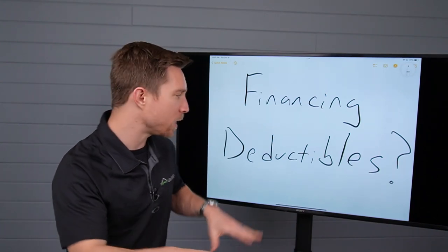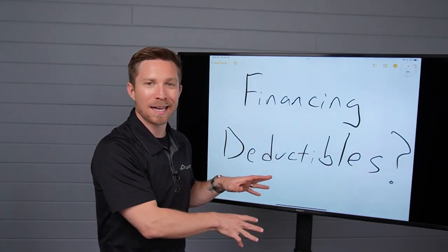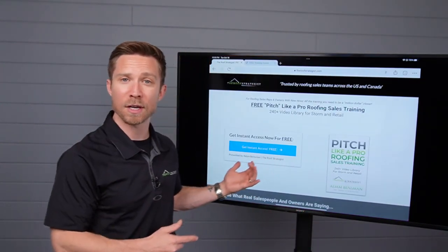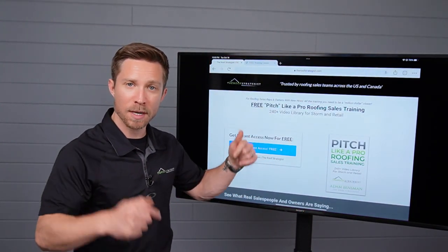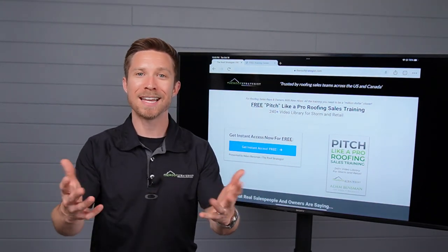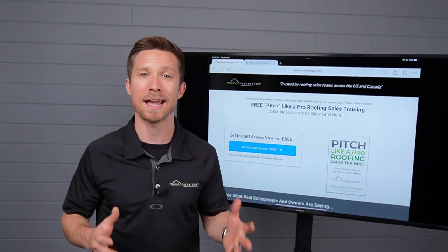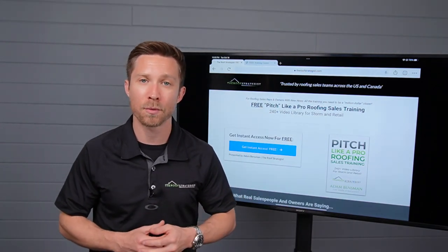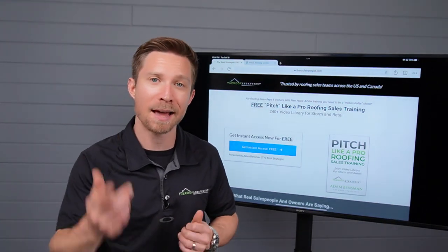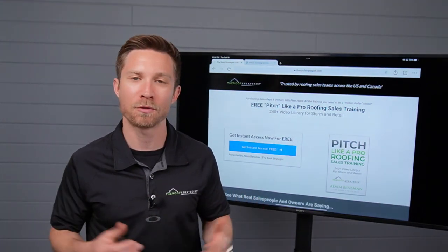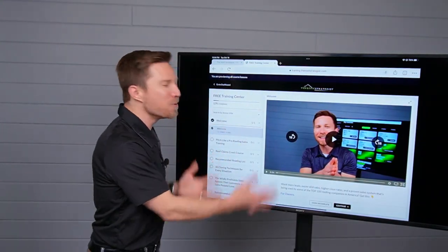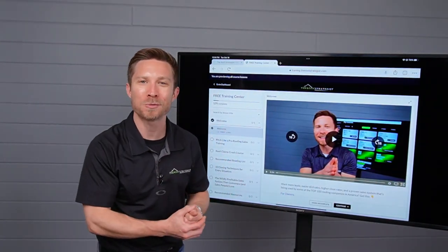And if you want some more videos on the whole deductible topic, I wanna get you inside a freebie of mine. It's the Pitch Like a Pro roofing sales training video library, available for free by clicking the video description, or going to theroofstrategist.com. And we have a new way to help too. You can text the word free, F-R-E-E, over to 303-222-7133. And that phone number is in the description as well. Just text the word free, we'll get you set up.